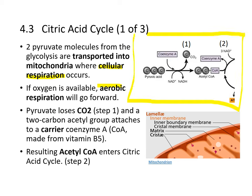At the beginning, pyruvic acid loses one carbon in the form of CO2 while combining with coenzyme A, and that requires the reduction of NAD+ to NADH. So it loses CO2 in step one, and then the two-carbon acetyl group is attached to the carrier coenzyme A, which is derived from vitamin B5.